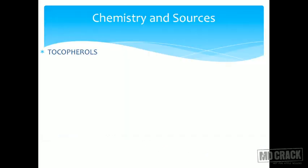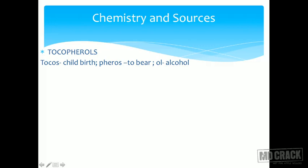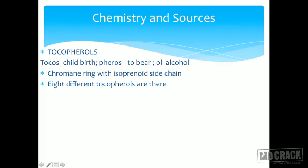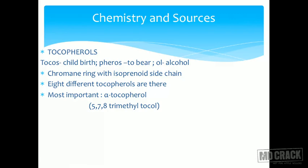What is its chemistry and what are the sources? They are all called tocopherols. The word comes from 'tocos' meaning childbirth, 'fero' meaning to bear, and 'ol' meaning alcohol — so it is an alcohol needed for childbirth. It contains a chromane ring with an isoprenoid side chain. There are eight different tocopherols, but the most important is alpha-tocopherol, also known as 5,7,8-trimethyltocol.